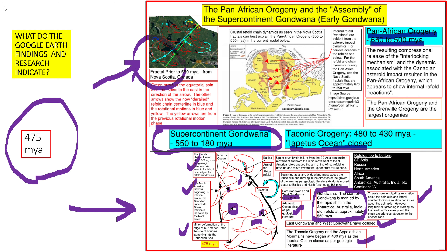The Taconic Orogeny and the Appalachian Mountains began at 480 million years ago as the Iapetus Ocean closes, as per geologic literature. Here's North America; the east coast is shown in this area. The Iapetus Ocean is labeled here with arrows showing where it's closed. Baltica and Avalonia are labeled. Beginning as a land bridge above the Africa arm and moving in the direction of its growth, Avalonia moved closer to Baltica and North America at 488 million years ago, as per geologic literature. There's this dynamic going on — an attraction towards a certain zone.